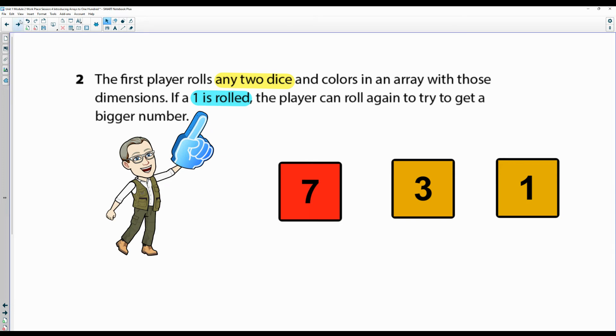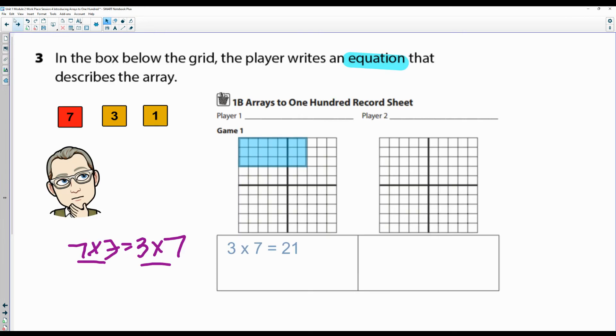In the box below, the player writes the equation. So in this case, if I spun a seven, three, and one, and I'm only going to use seven and three right away to fill up a bigger chunk, I can remember the commutative property - seven times three or three times seven. In this case, they're going to use three times seven - that's three row, row, row boats of seven, twenty-one equals twenty-one. You can write it right in there with a regular pencil.